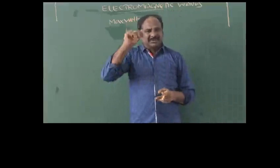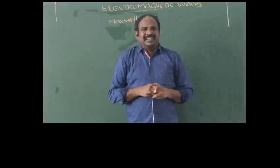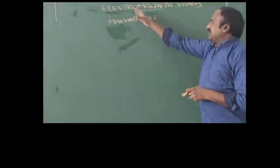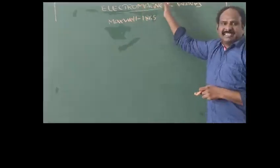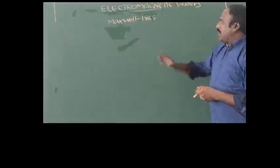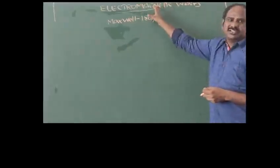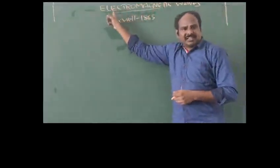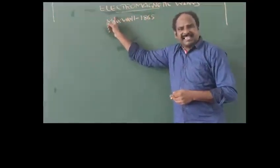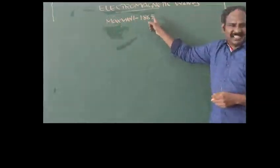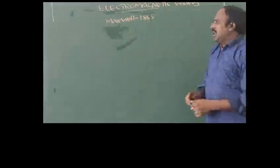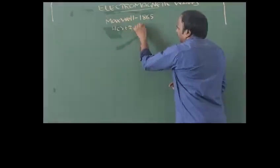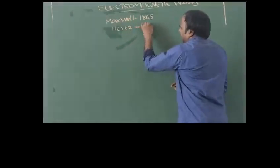Today we are going to discuss the entire part related to electromagnetic waves. These electromagnetic waves were discovered by the scientist Maxwell in the year 1865, and practically proved by the scientist Hertz in the year 1895.